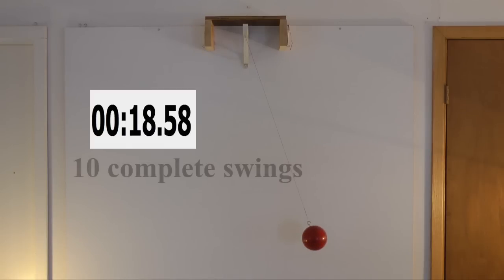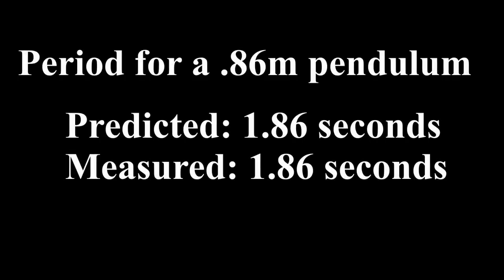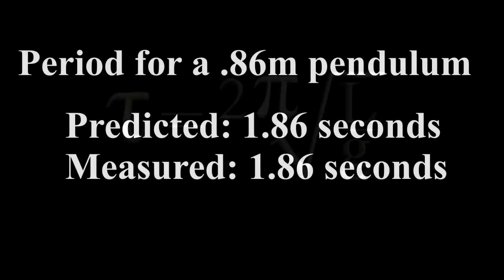Elapsed time for 10 swings is 18.58 seconds. Dividing by 10 and rounding to 2 decimals, we get 1.86 seconds per swing, equal to the predicted value. The formula is confirmed. The period of any pendulum can be determined using this equation.